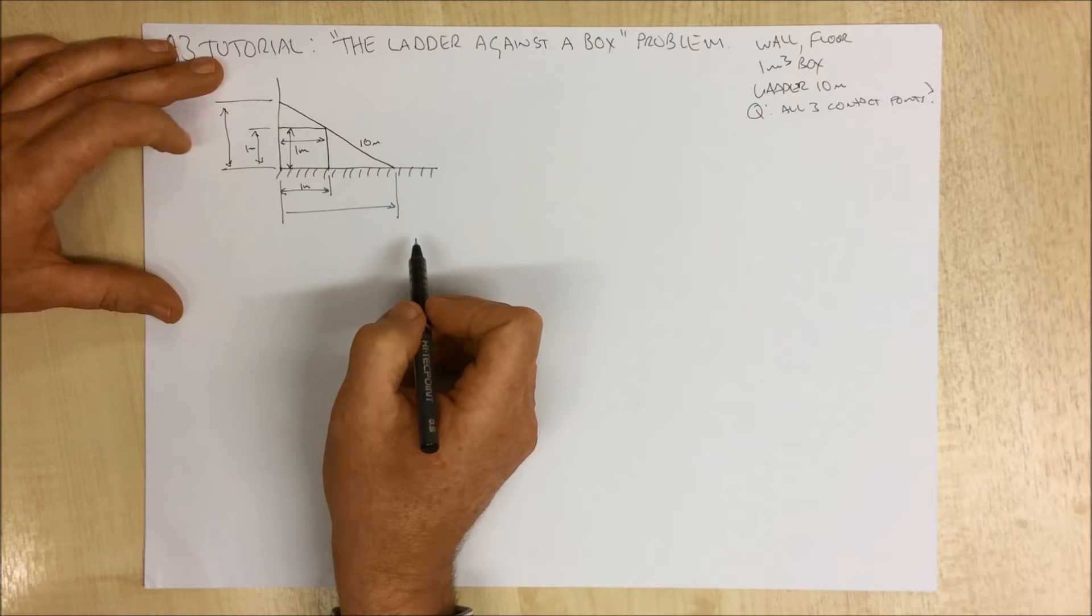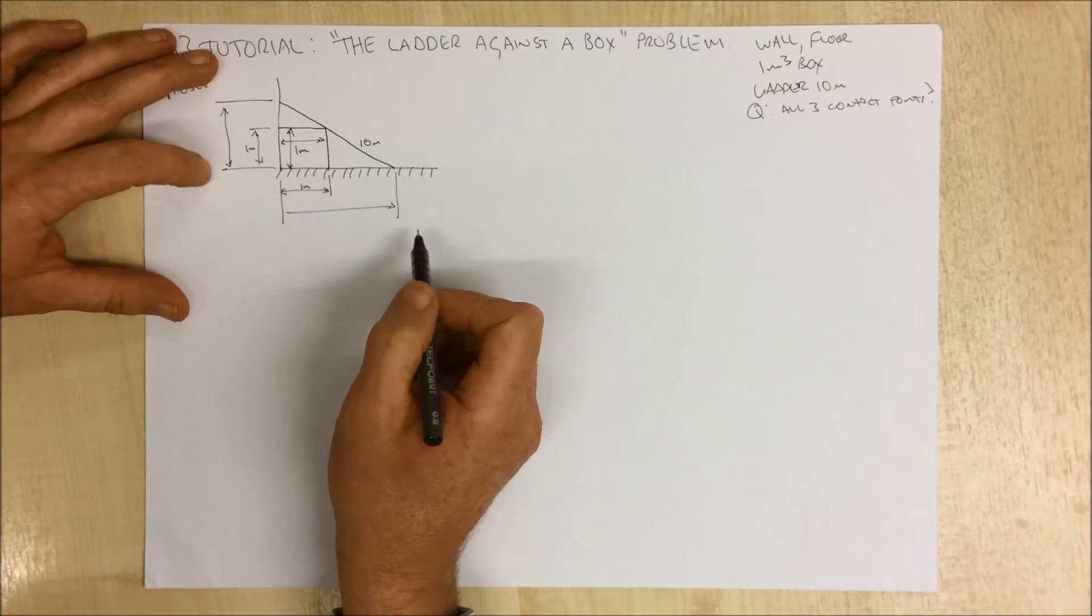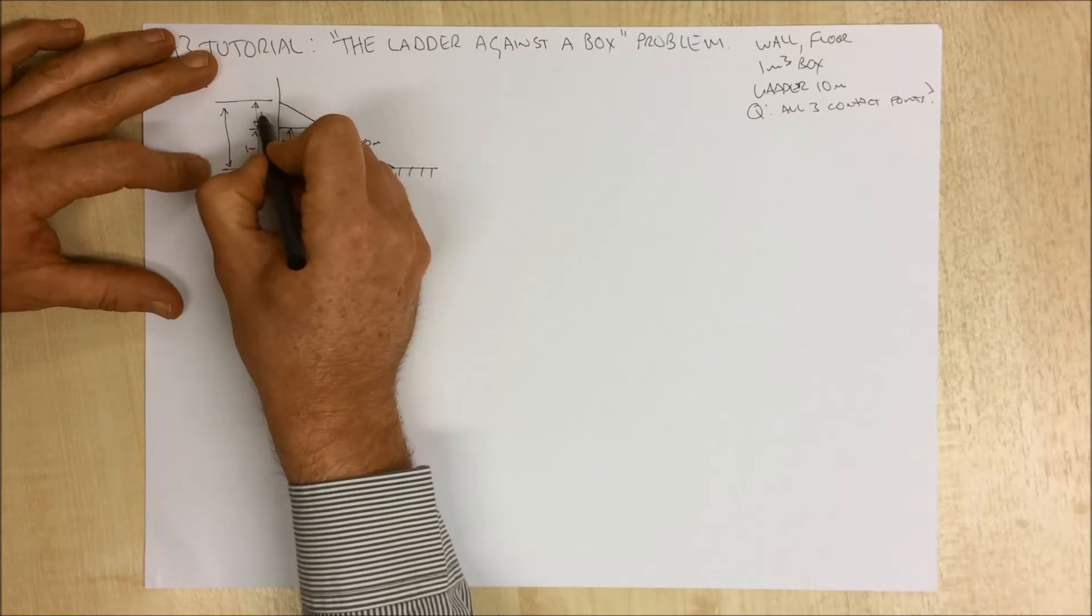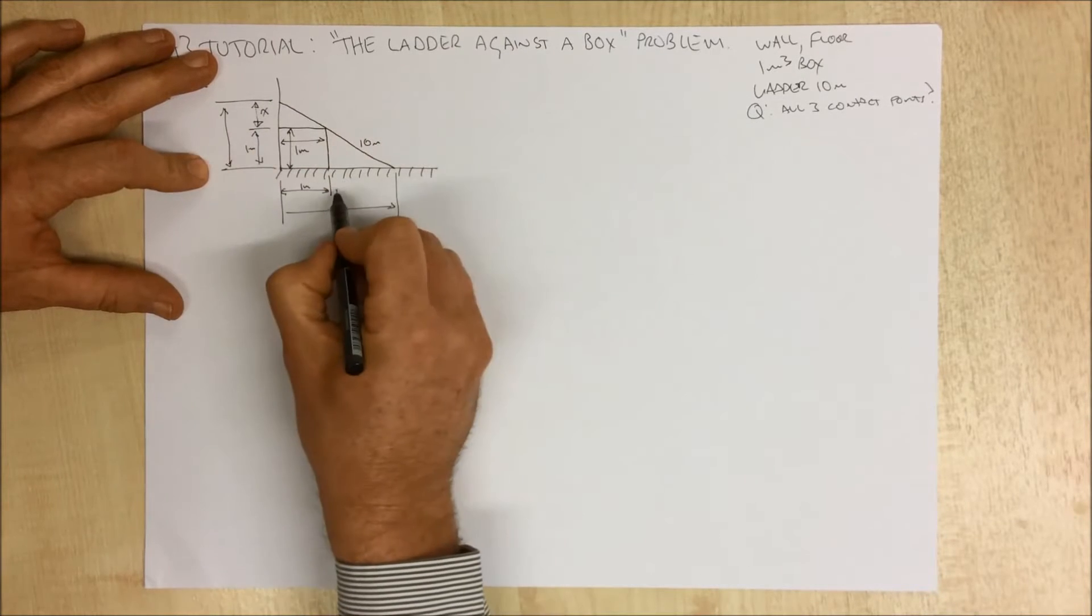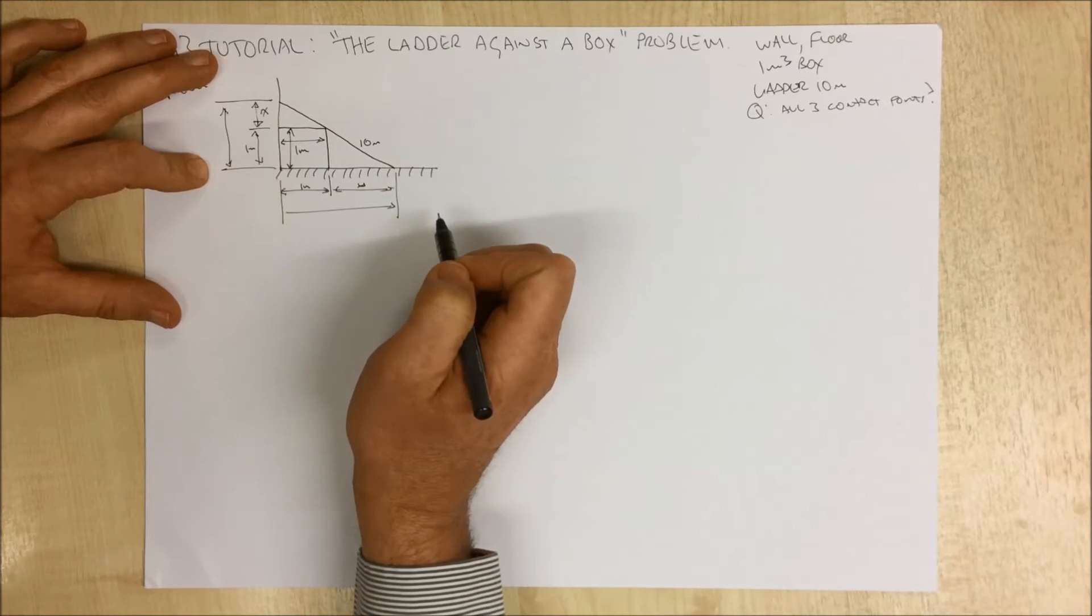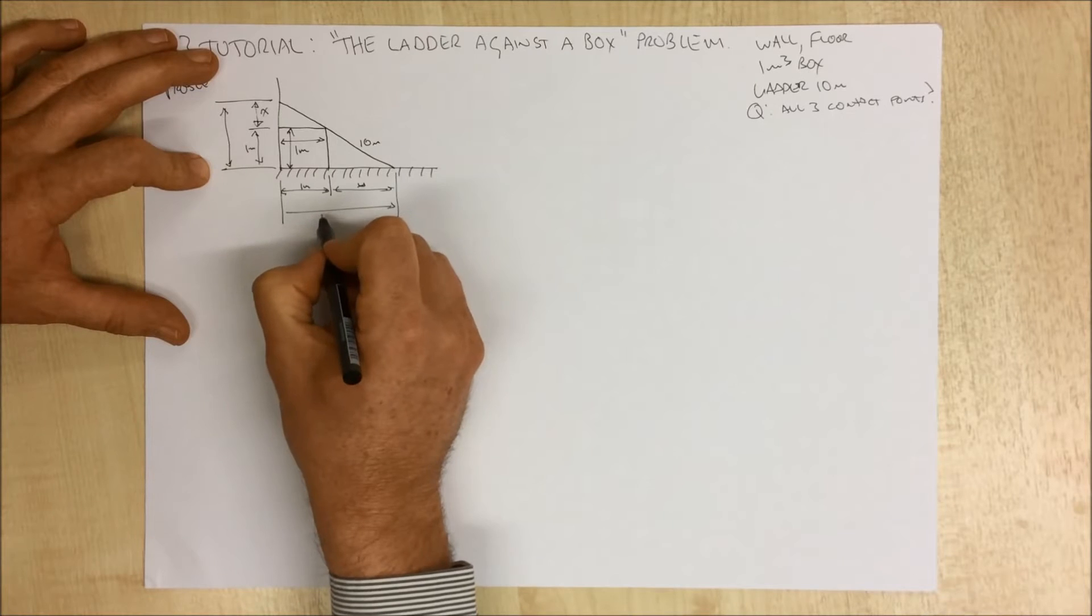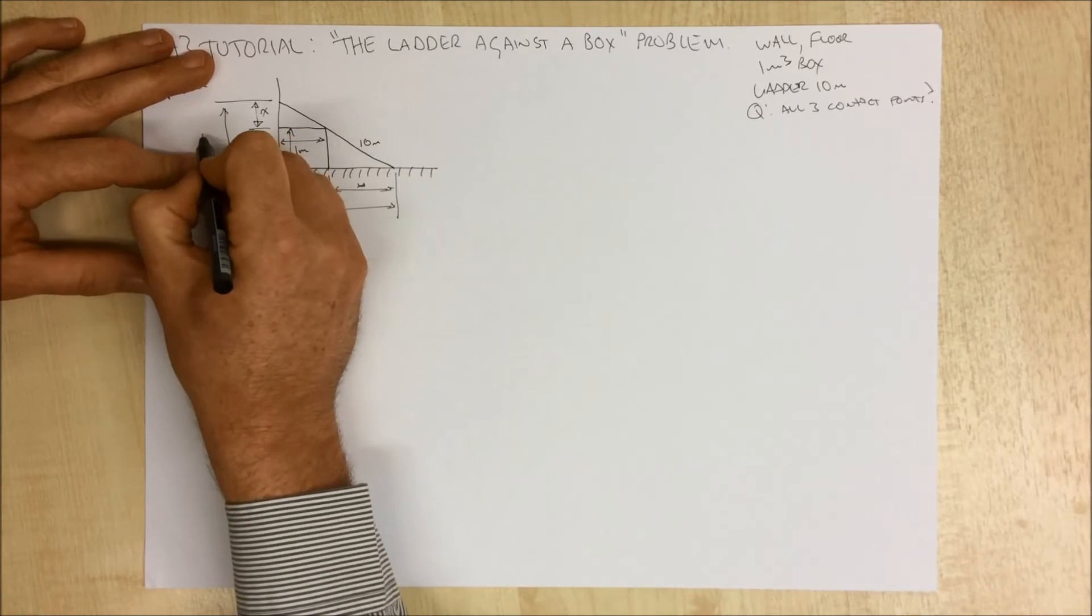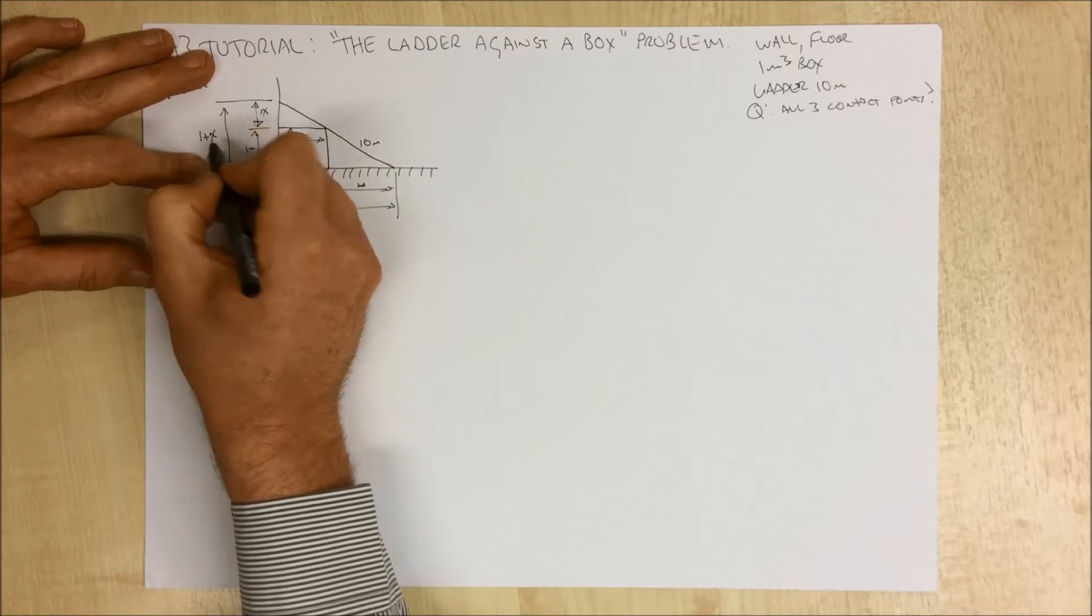So what we can do is start putting some labels on this. I'm gonna label this unknown distance here as being distance x and this distance here we're gonna call distance y. Obviously then this distance here is 1 plus y and this distance here is 1 plus x.